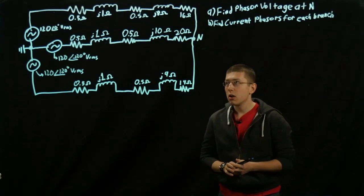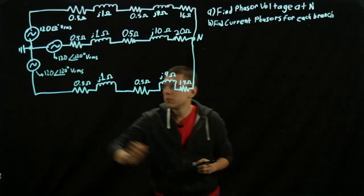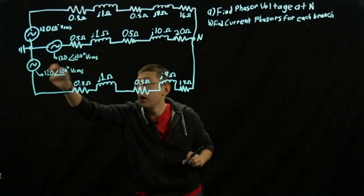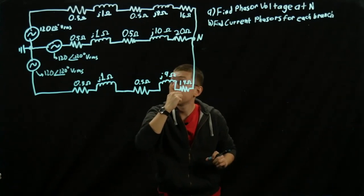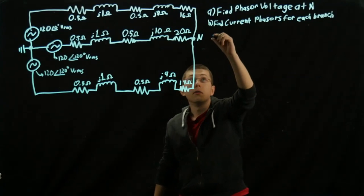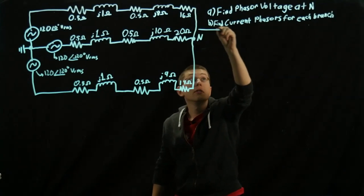So to start off, we're going to just do some simple conversions for our three branches. I'll label them branch one, two, three.